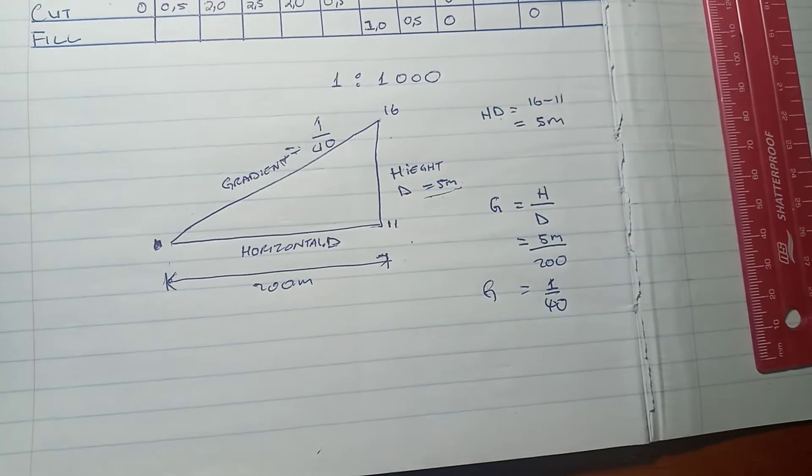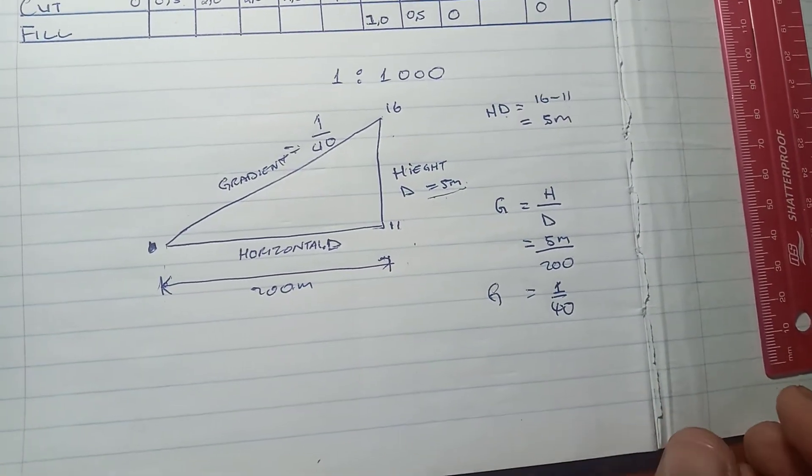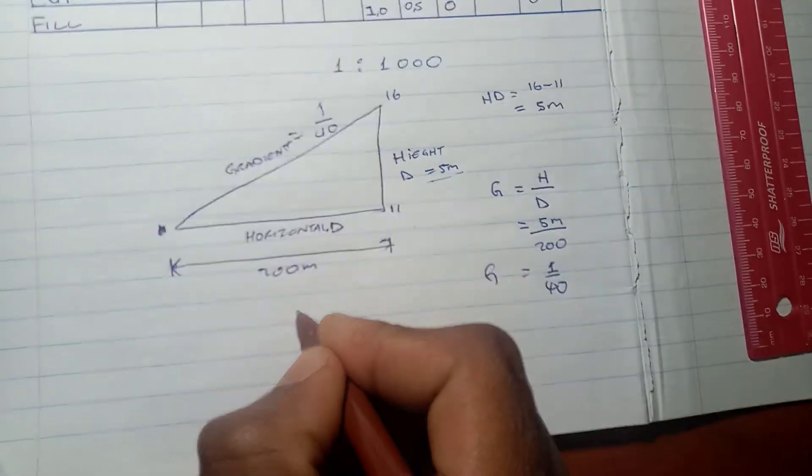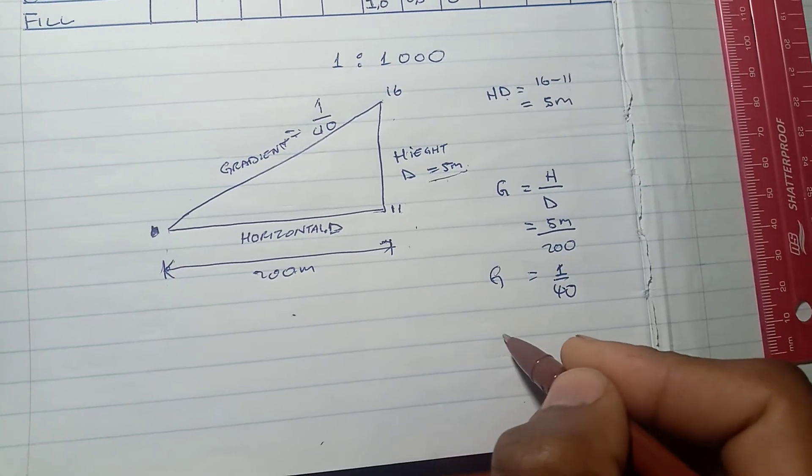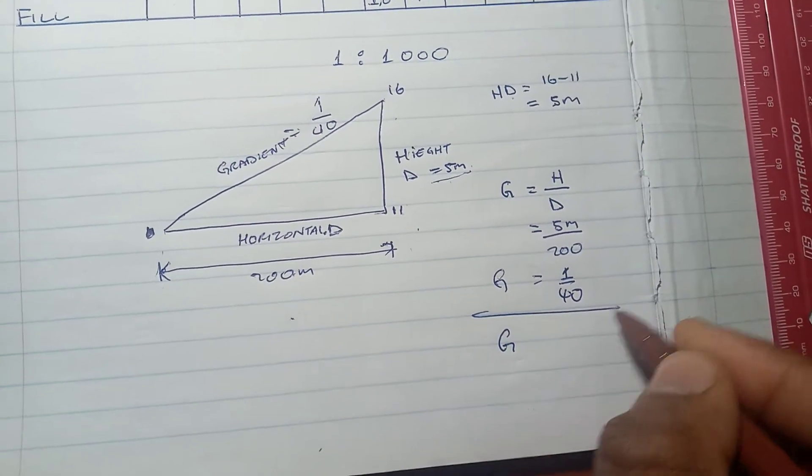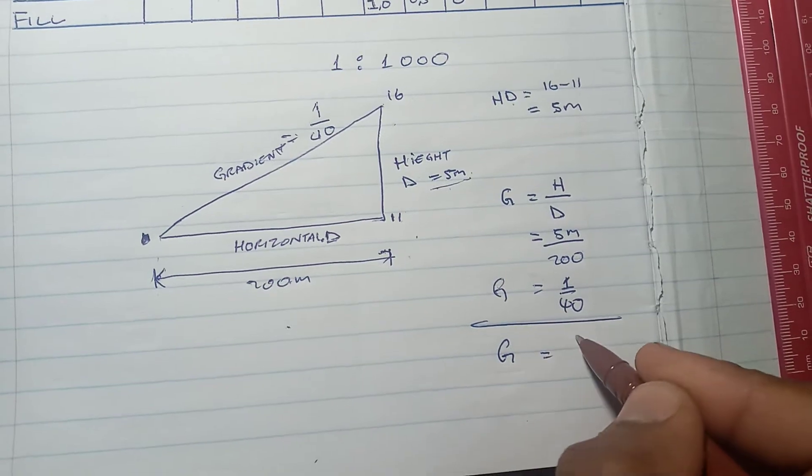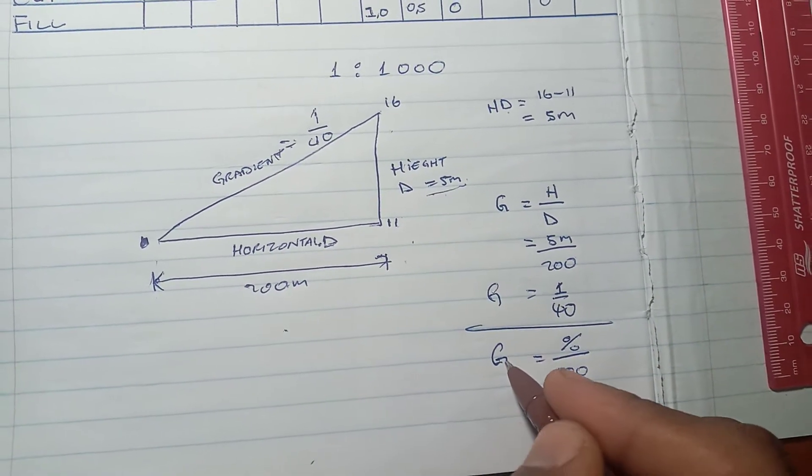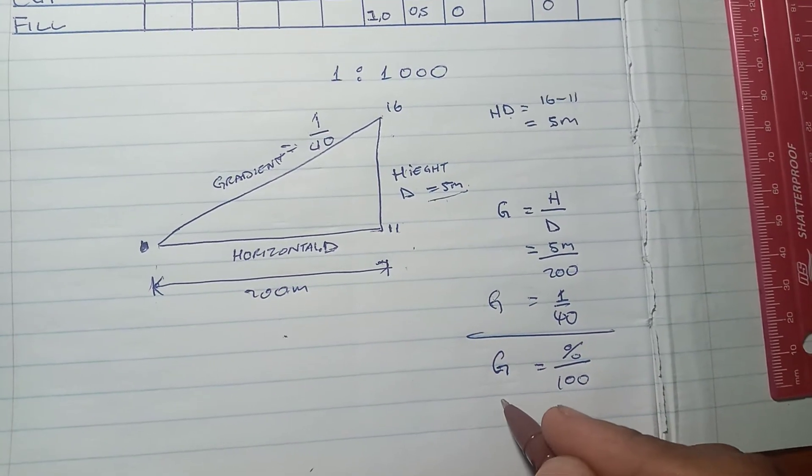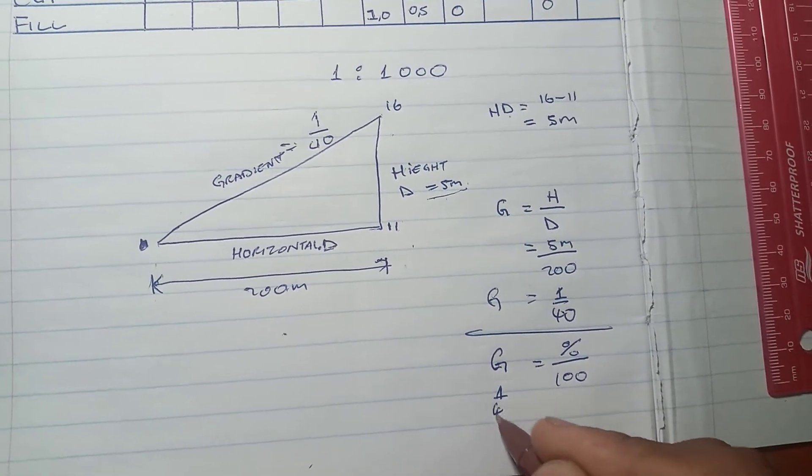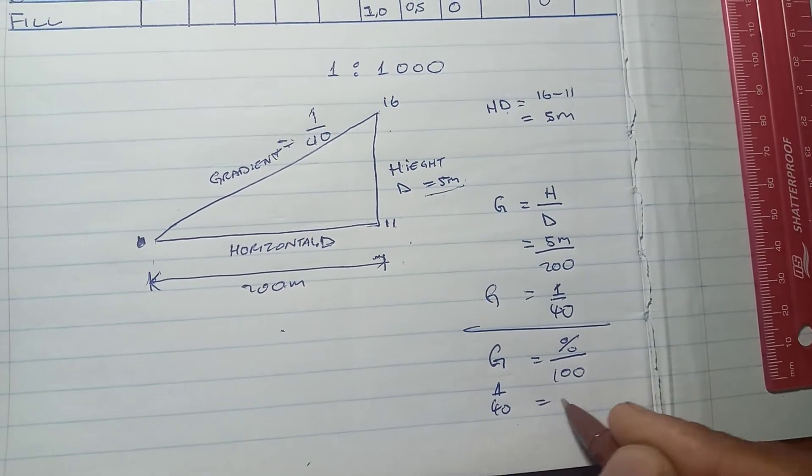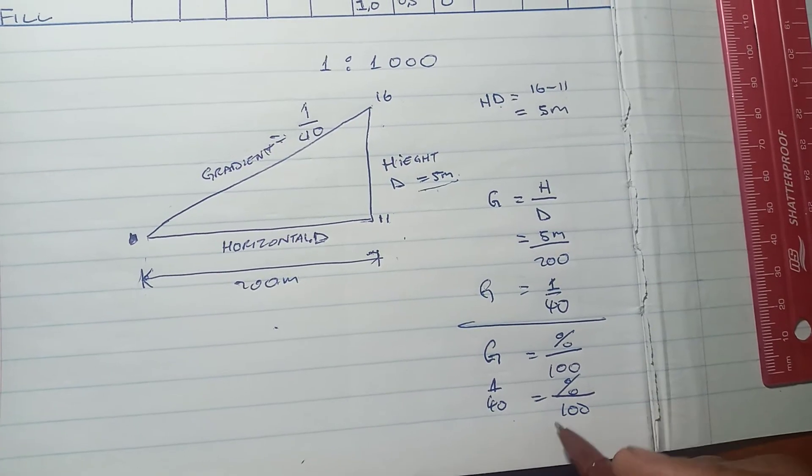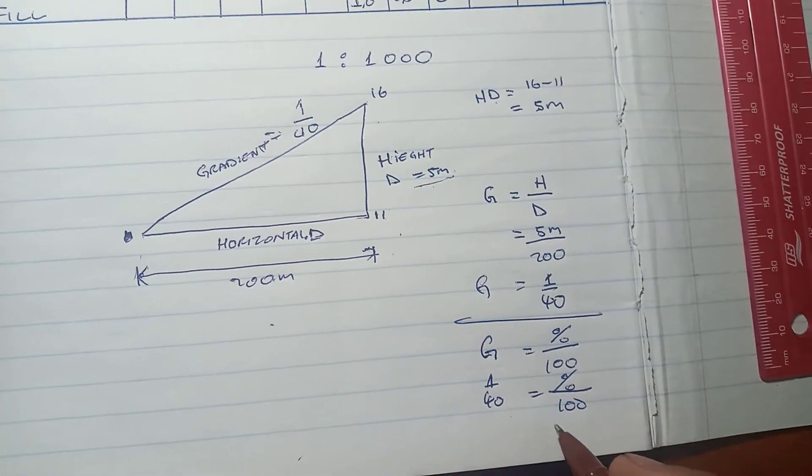This question asks for percentage. The percentage formula is: gradient equals percent over 100. So it equals 100 times the gradient.